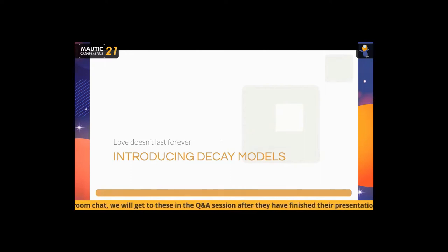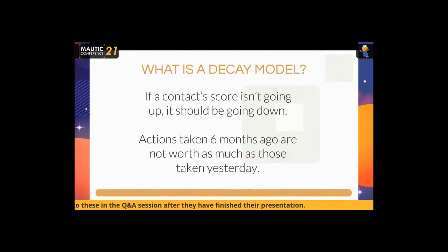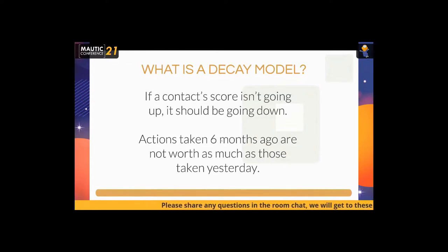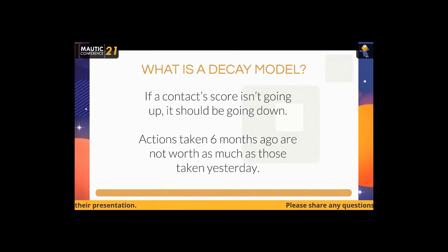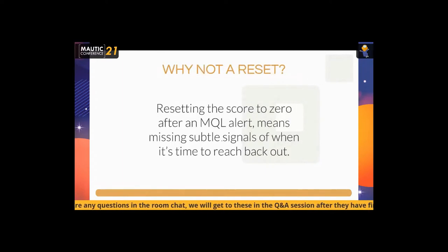Let's talk about decay models. Basically, if a contact's score isn't going up, it should probably start going back down. Their intent, interest, and trust for your brand will all wane if they aren't actively visiting your website and engaging with you. Actions taken six months ago really aren't worth anything today — those actions indicated they were in market six months ago. You want to be acting off of current signals, so it's important to introduce a decay model.